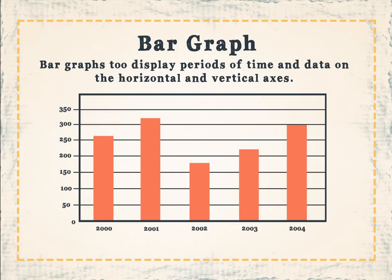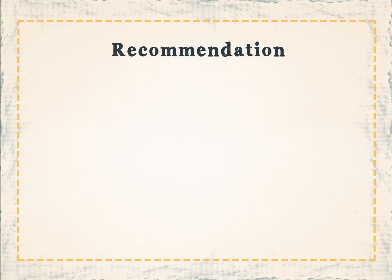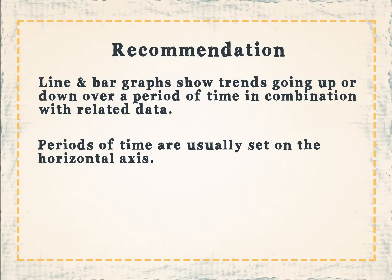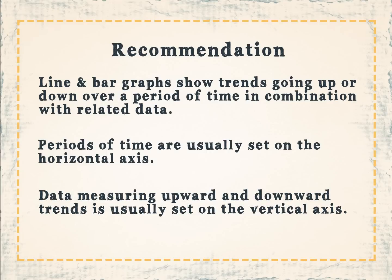Bar graphs also display periods of time and data on the horizontal and vertical axis. Line and bar graphs show trends going up or down over a period of time in combination with related data. Periods of time are usually set on the horizontal axis, while data measuring upward and downward trends is usually set on the vertical axis.